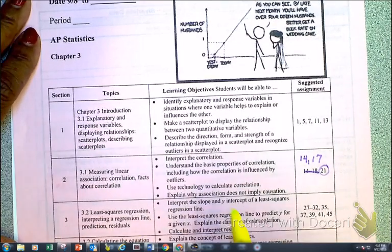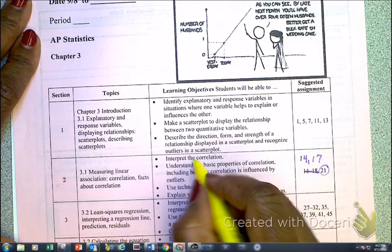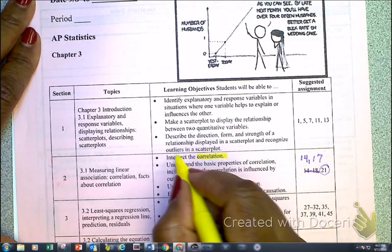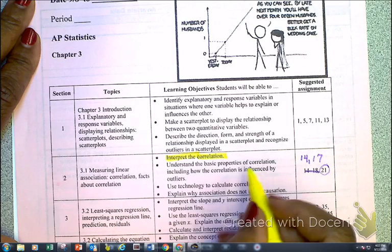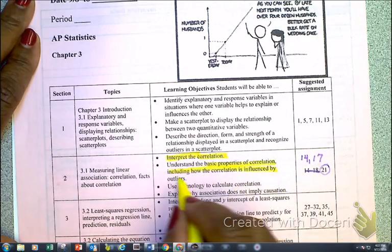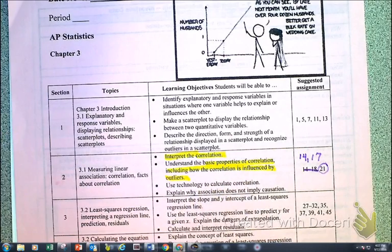Yes, y'all know what this is. This is about correlation. So this video is about correlation, interpreting it, the basic properties, including how correlation is influenced by outliers. So turn to page two of your notes and let's get started.